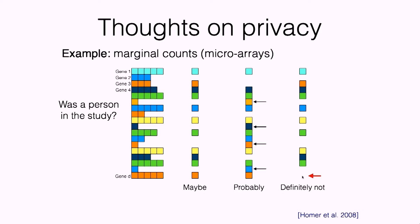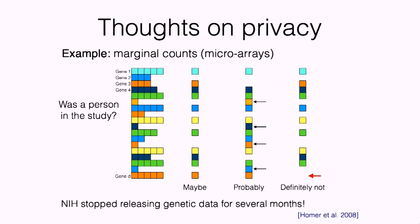It turns out Nils Homer, a statistical biologist, did this study and figured out that just based on data the NIH was releasing, he could find and identify people in studies. This actually caused the National Institutes of Health to stop releasing genetic data for several months in the early 2010s, or just before 2010. So that's kind of a little issue.